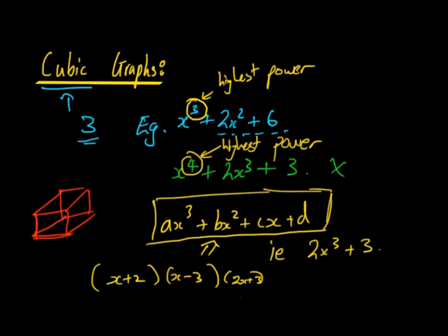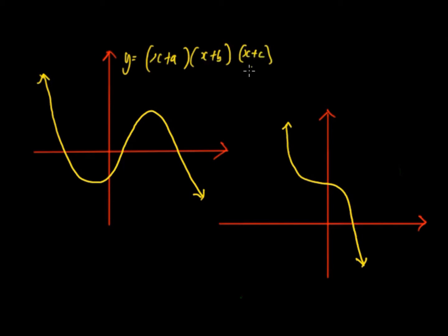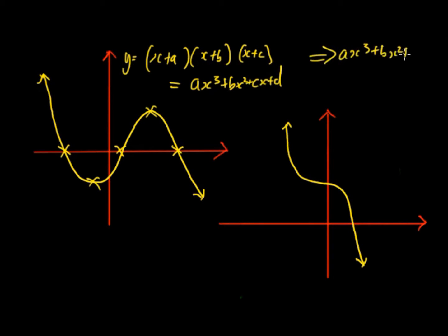So what do cubic graphs actually look like? There are multiple forms — it's not like linear lines, which are always straight, or quadratics, which always have a turning point. Both of these graphs here are cubic graphs, but they're slightly different. One is in the form with three brackets (x+a)(x+b)(x+c), giving three different intercepts and two turning points.